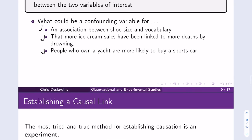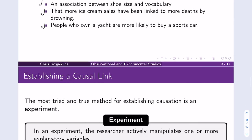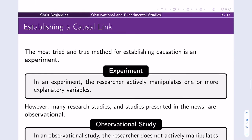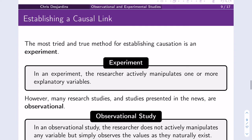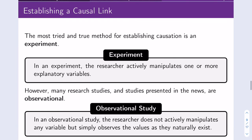So hopefully those make sense to you, and we'll spend some time in class going through some of these. So how do we establish a causal link? So far we've just been talking about associations. How do we actually establish a causal link? You've learned about this in school, and this is really the most tried and true method for establishing causation, and that's an experiment.